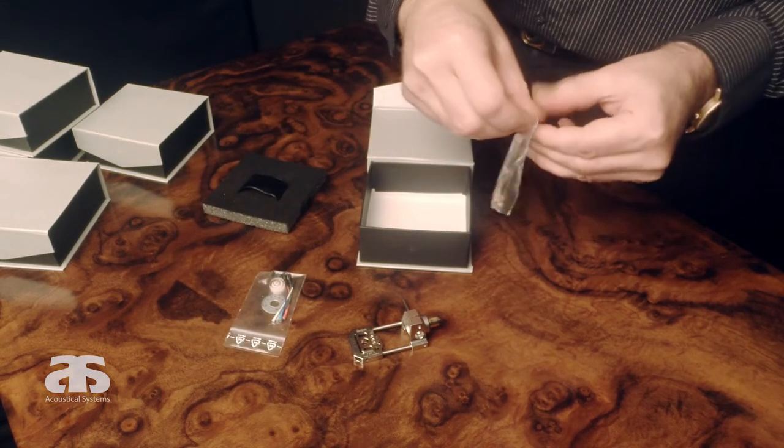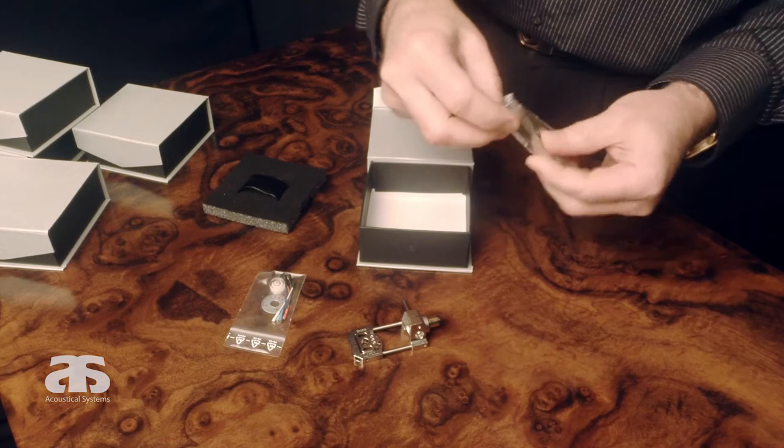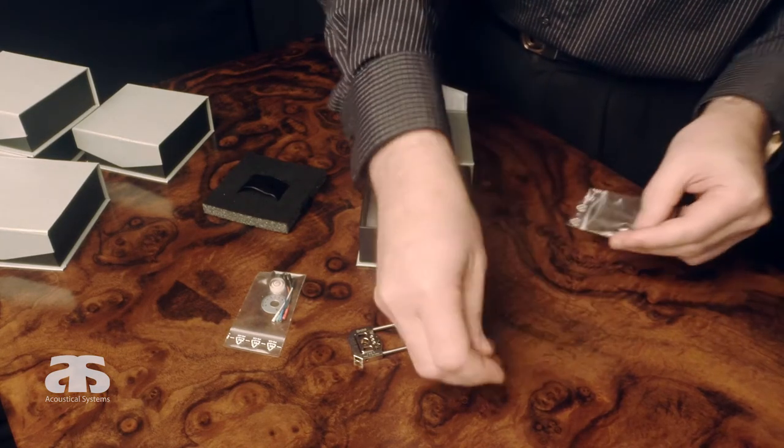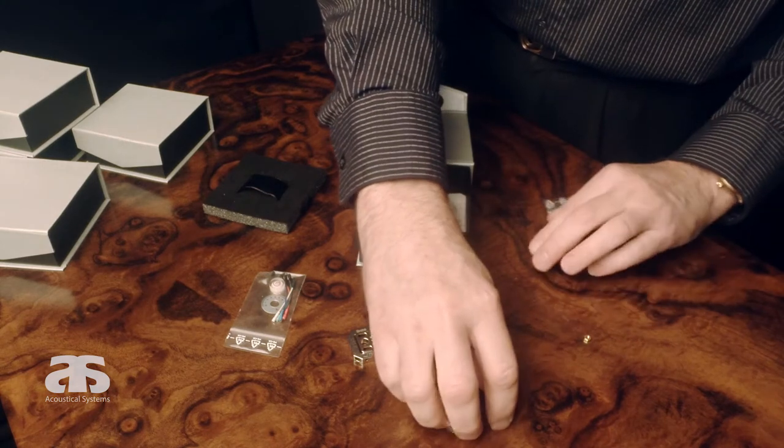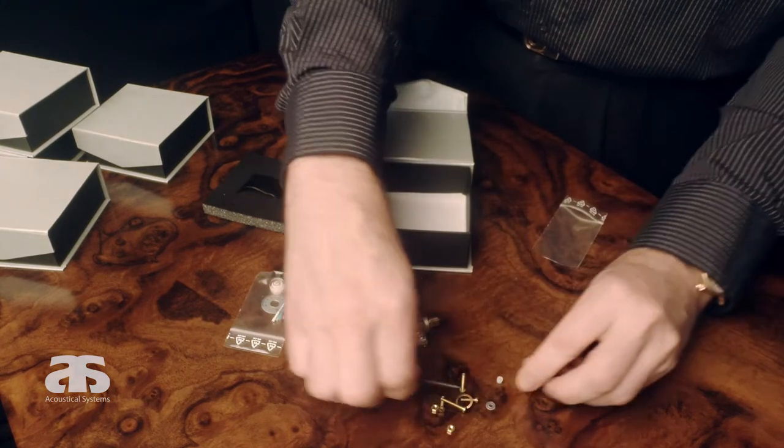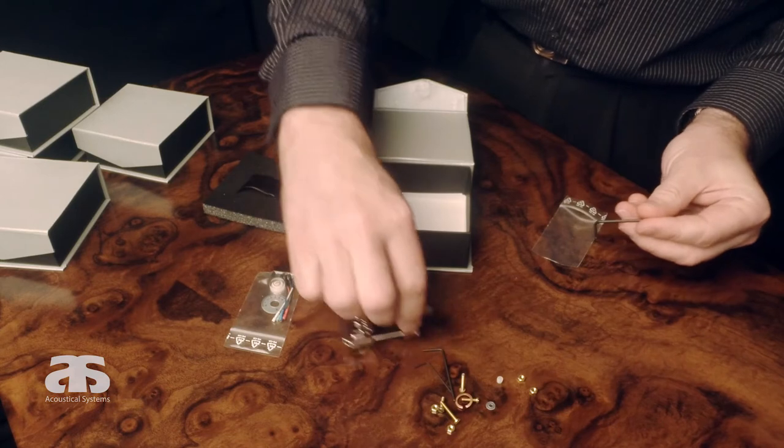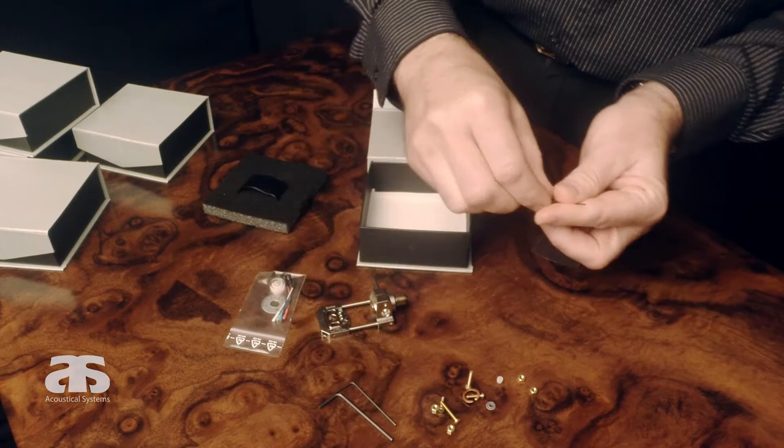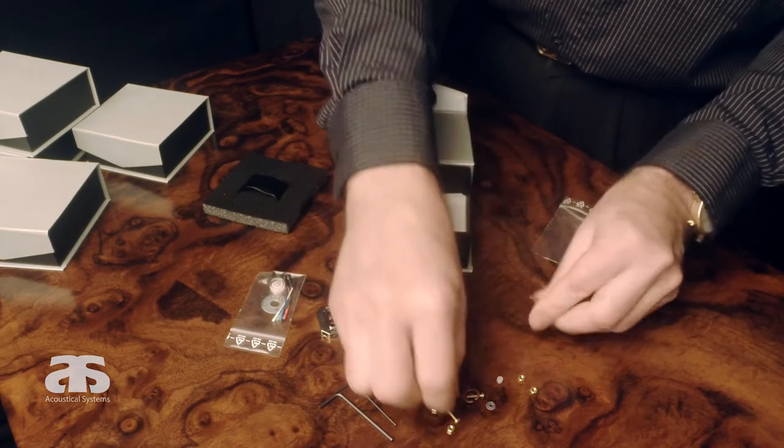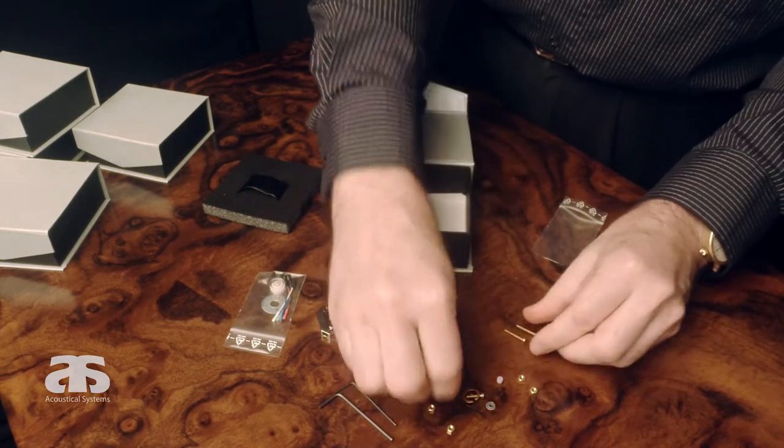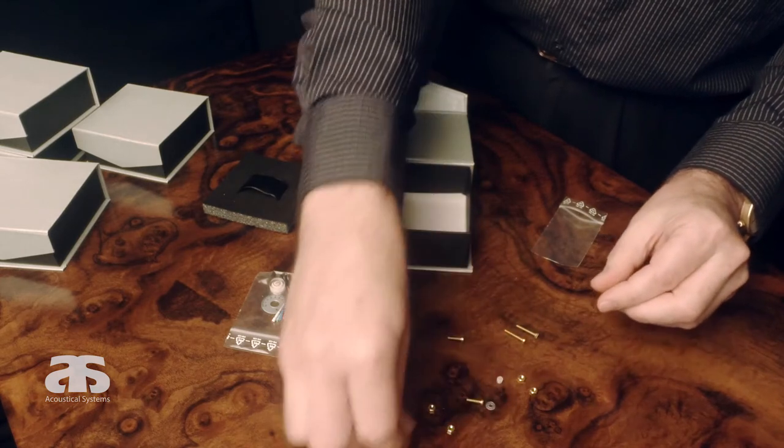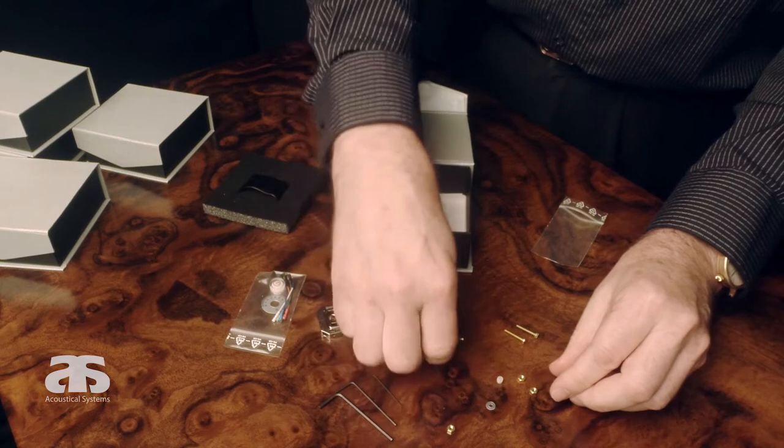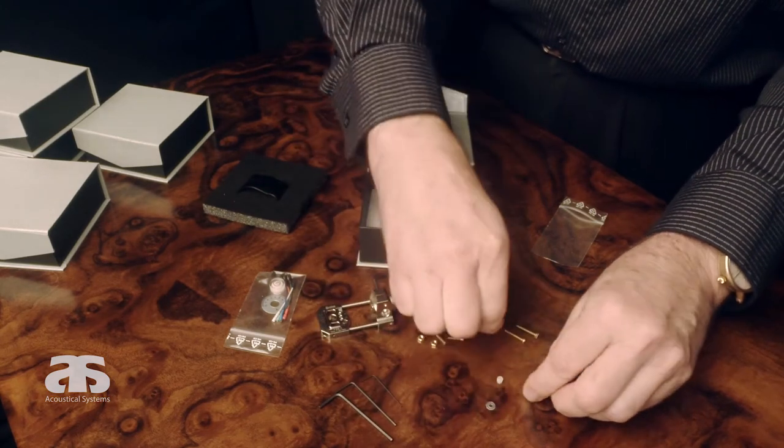In the other box you will find all the mounting gear and all needed tools to make use of all the options the Arche provides. You will find three L keys of different sizes, two complete sets of non-magnetic brass mounting screws with accompanying balls and nuts.